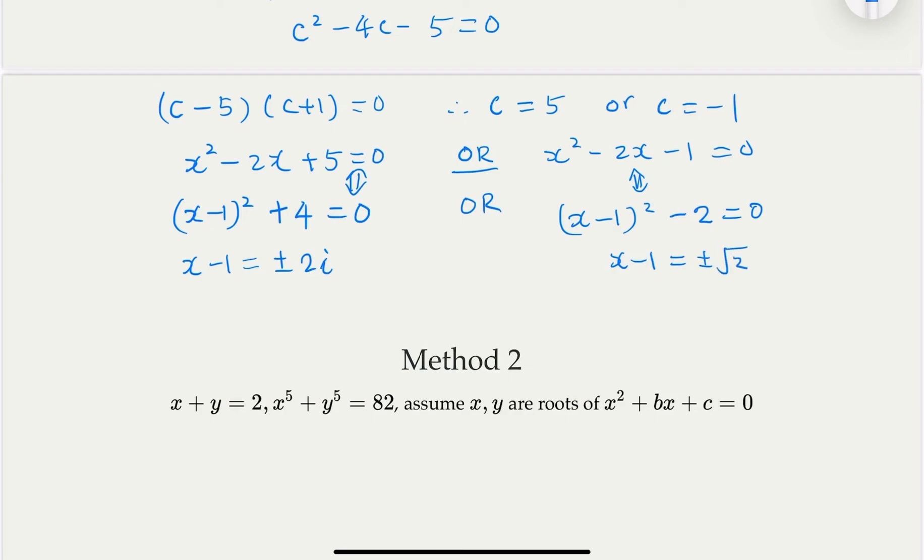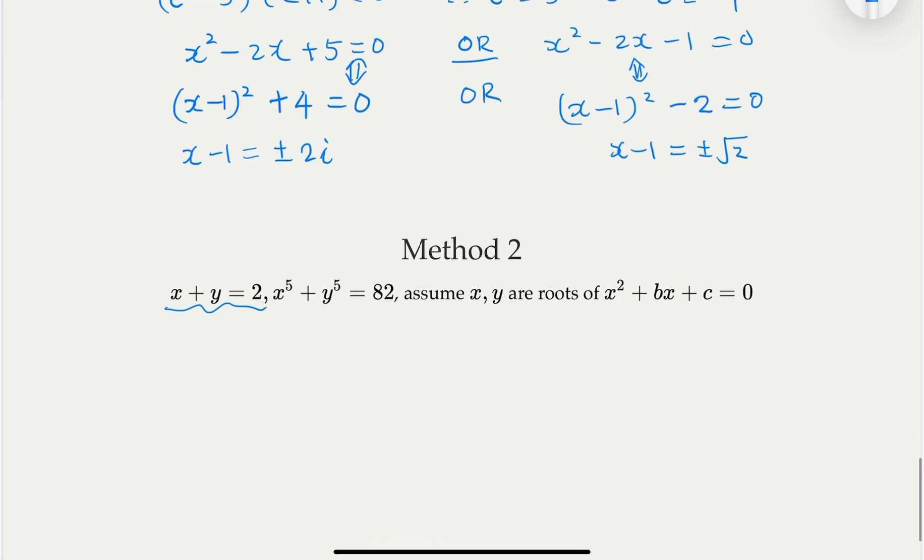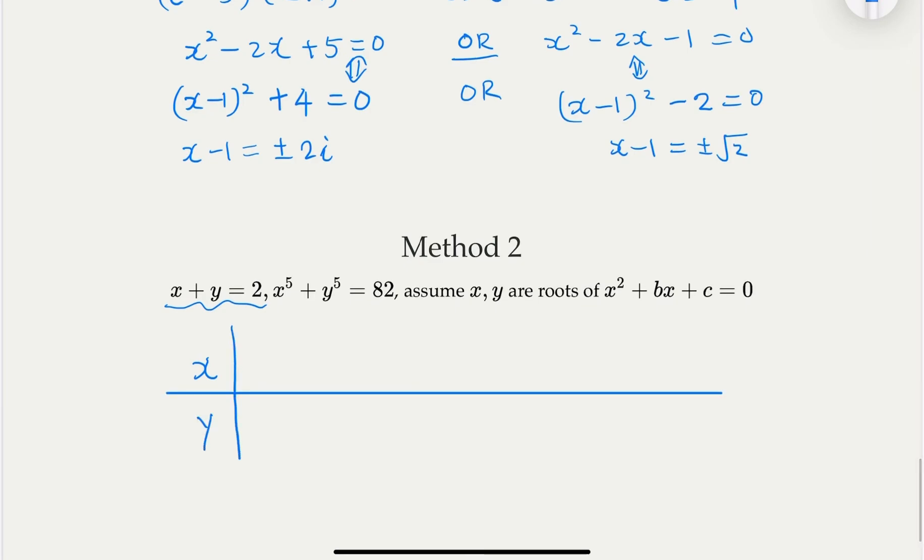So we have four solutions for x. And what is y? x plus y equal to 2. So let's write out the four equations here. x and y. So x either is 1 plus 2i, or 1 minus 2i. Or in this case, 1 plus square root of 2 or 1 minus square root of 2. Four solutions.